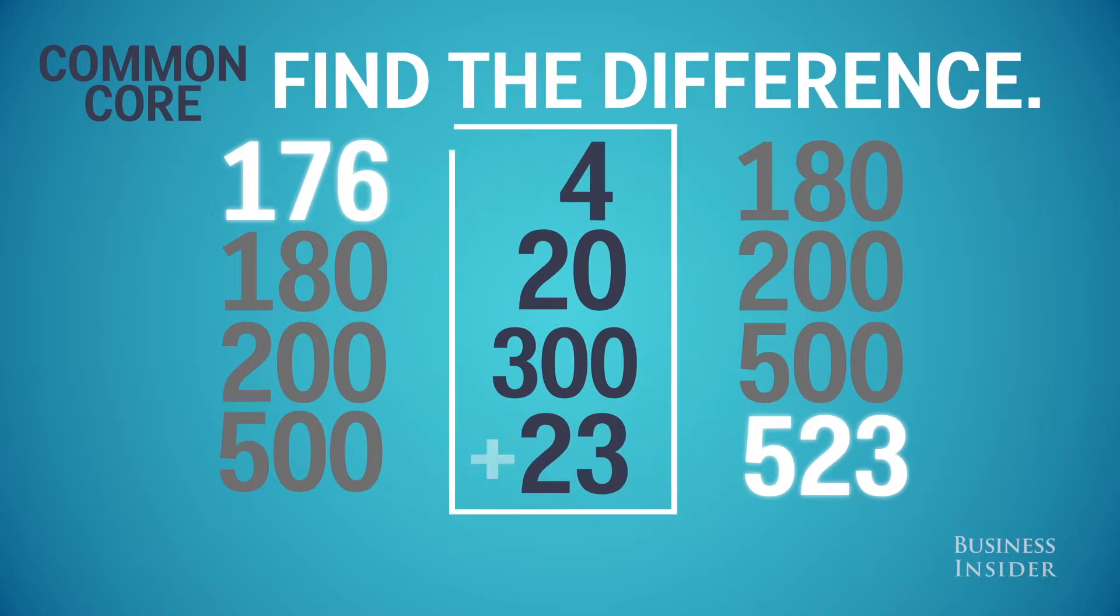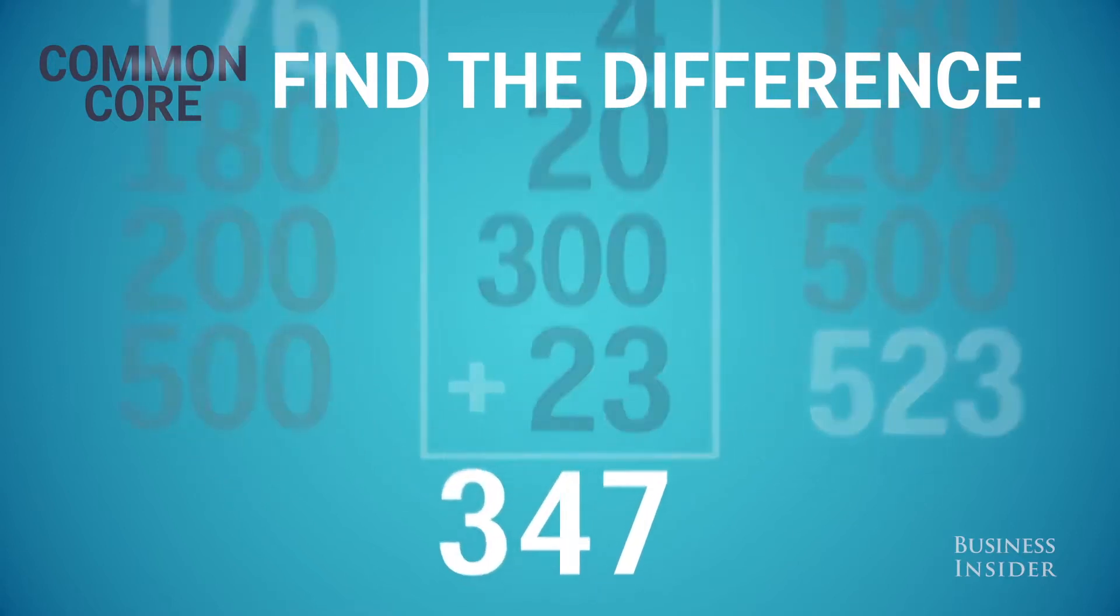Now add up all the numbers you added along the way. 4 and 3 is 7. 2 and 2 is 4. Bring down the 3. And we have 347.